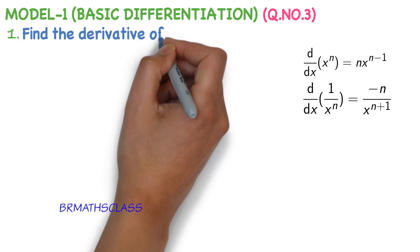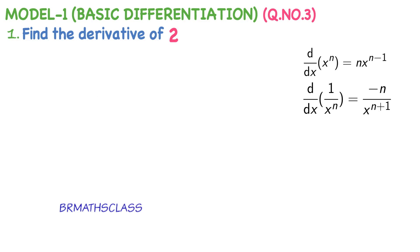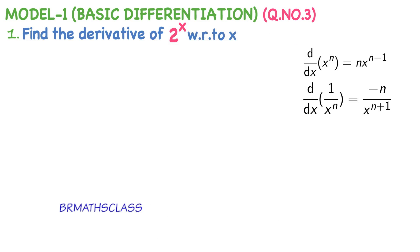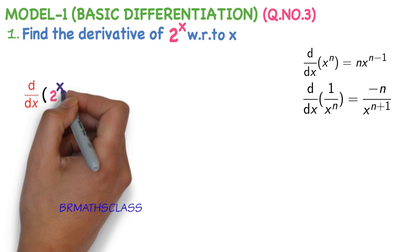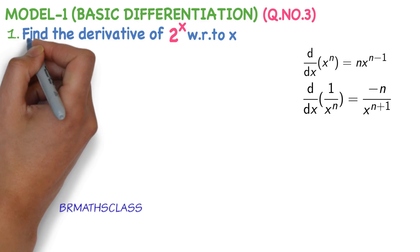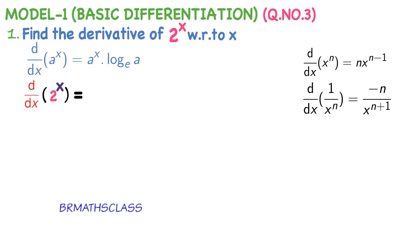Find the derivative of 2 power x with respect to x. Symbolically, we write it as d by dx of 2 power x. This means the derivative of 2 power x with respect to x. The formula we use here is: d by dx of a power x equals a power x into log a base e.